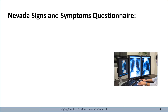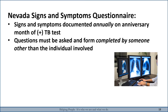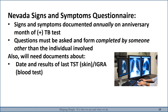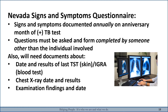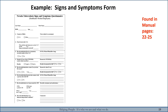The Signs and Symptoms Questionnaire is documented annually. No more skin testing or blood tests are required for these individuals — every year, they will receive an annual Signs and Symptoms Questionnaire in the month of their positive TB test. The questions must be asked and the form completed by someone other than the individual involved. Required documents include the date of the last TB skin test or blood test, the chest X-ray date and results, and the examination findings and date. The Signs and Symptoms form can be found in the manual on pages 22 to 25.